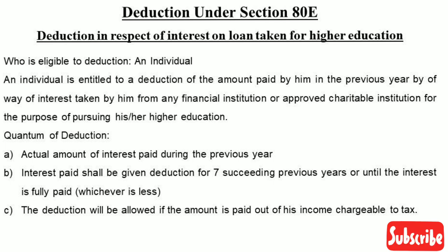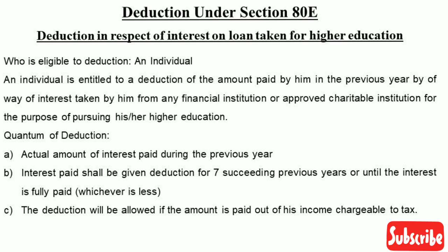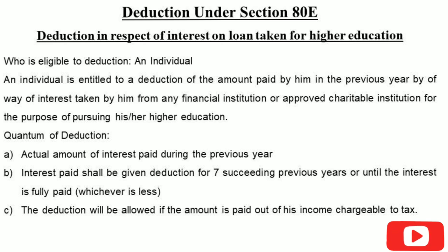The interest paid shall be given as a deduction for seven succeeding previous years or until the interest is fully paid, whichever is earlier. Once the interest is fully paid, the deduction can no longer be claimed.